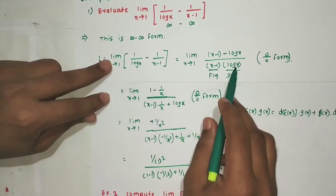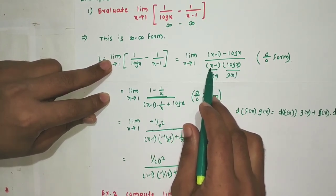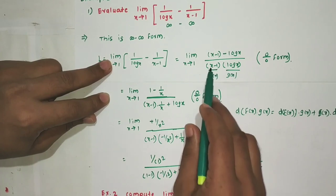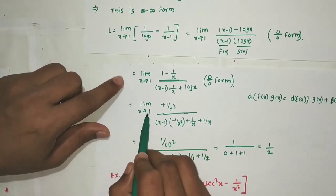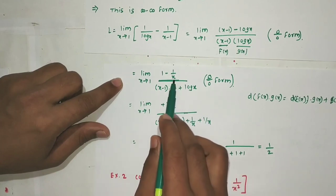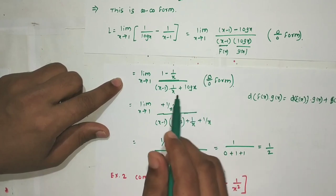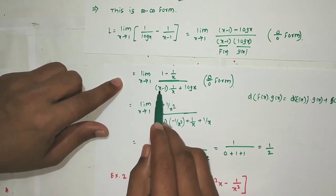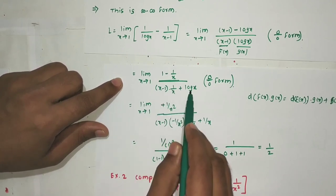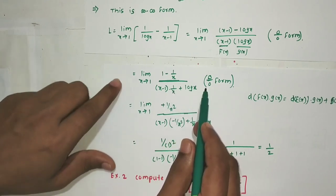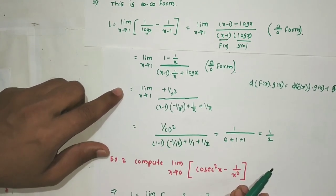The denominator derivative using product rule: (x-1) · (1/x) + ln(x) · 1. After putting x=1: numerator gives 1 - 1/1 = 0. At denominator: (1-1)·(1/1) = 0, and ln(1) = 0, so denominator also gives 0. This is again 0/0 form, so we apply L'Hôpital's rule a second time.